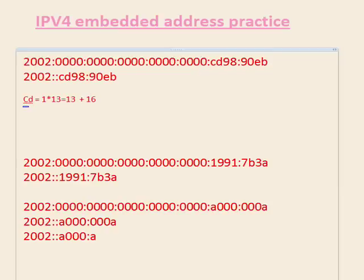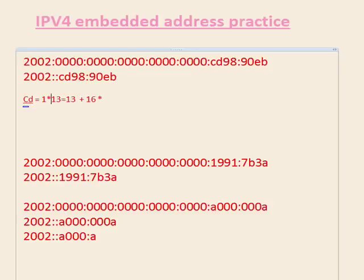Plus sixteen times C, because C is the second digit. If you're familiar with binary, you know it's base powers — two to the zero, two to the one, etc. This is the same thing except it's base sixteen, so it's sixteen times C. We know D was thirteen, so C has to be twelve.